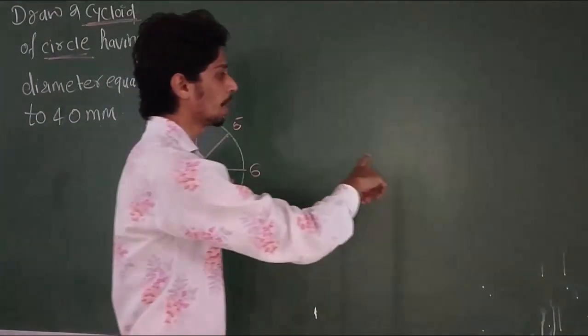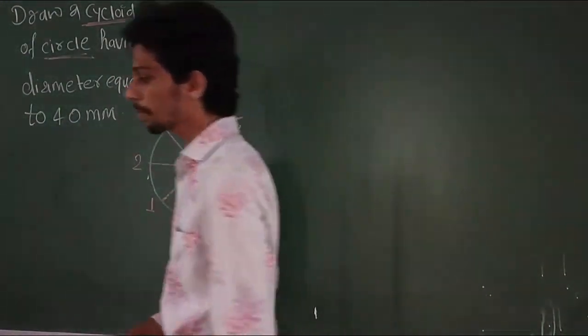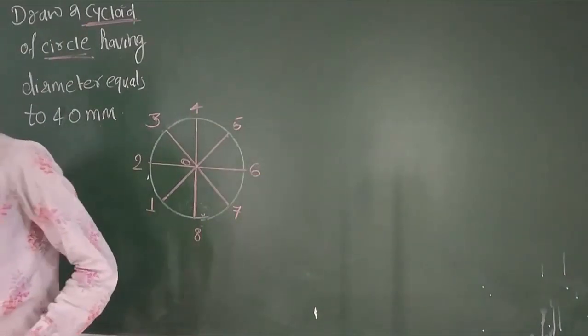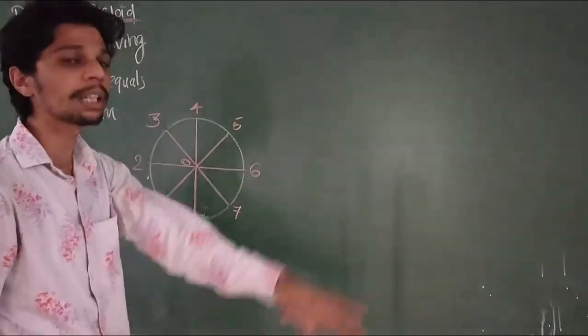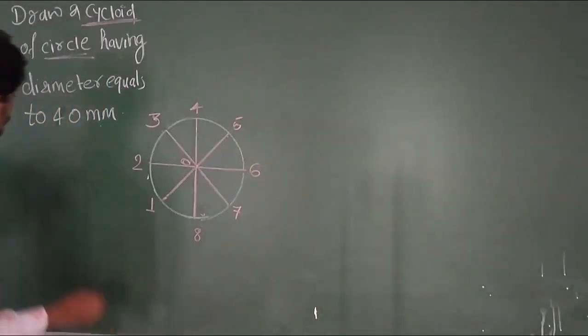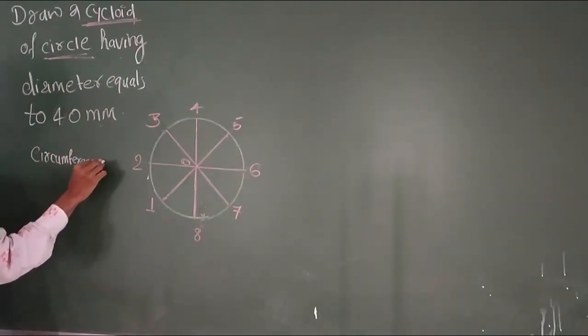Now, what do you do? This circle will roll. How much will it go? You have to calculate the circumference. Circumference is the formula: pi times diameter.